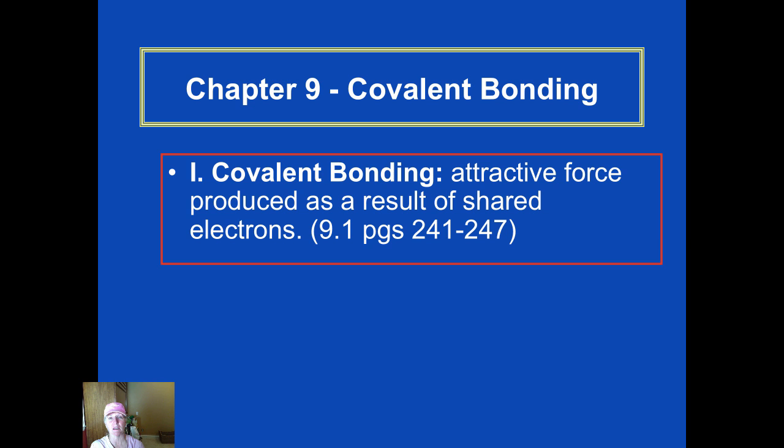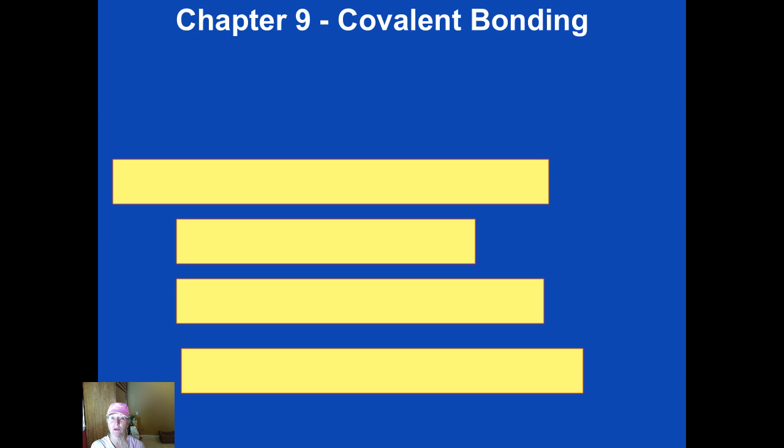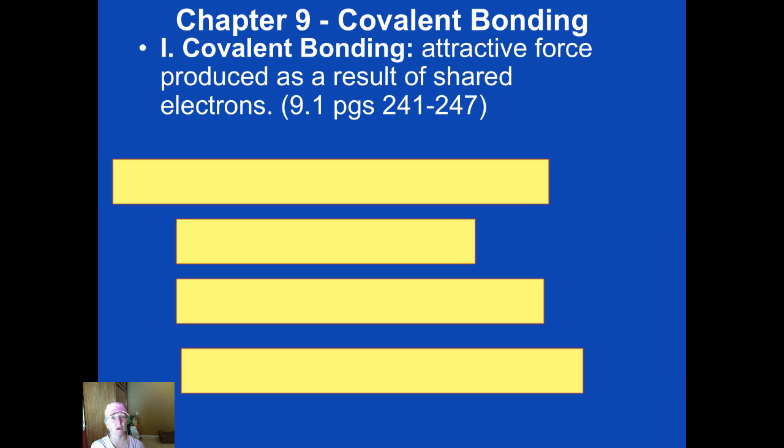The first thing that we need to define is what's a covalent bond. It's an attractive force that occurs when two or more atoms share one, two, or three pairs of electrons. So the difference between covalent bonding and ionic is there is no transfer of electrons. There's only sharing.